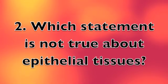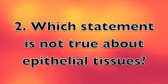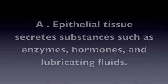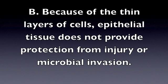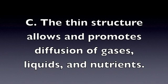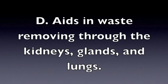Question 2. Which statement is not true about epithelial tissues? A. Epithelial tissue secretes substances such as enzymes, hormones, and lubricating fluids. B. Because of the thin layers of cells, epithelial tissue does not provide protection from injury or microbial invasion. C. The thin structure allows and promotes diffusion of gases, liquids, and nutrients. Or D. Aids in waste removing through the kidneys, glands, and the lungs.